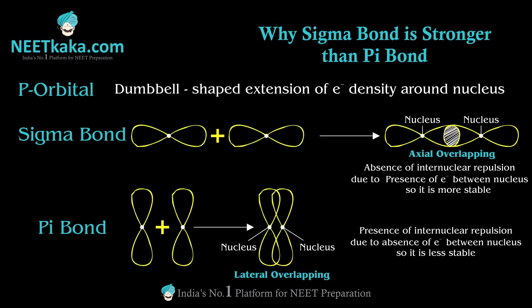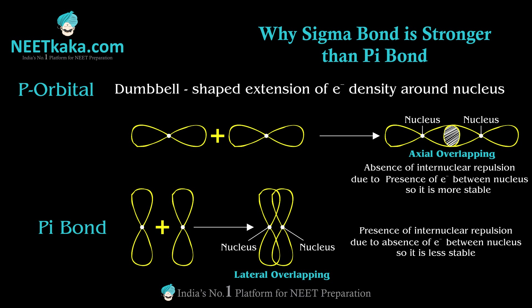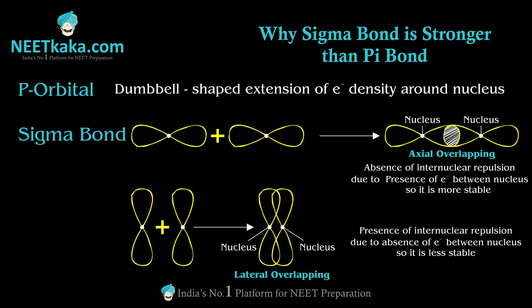Quick review: sigma bonds form via axial overlapping when orbitals approach at a 180-degree angle, and there is absence of internuclear repulsion. Pi bonds are formed by lateral overlapping when orbitals approach at a zero-degree angle, and they are weaker than sigma bonds due to internuclear repulsion.